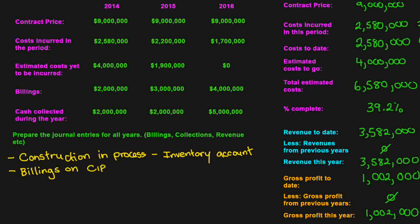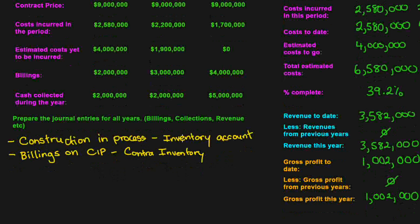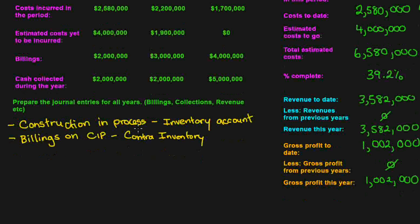The second account is Billings on Construction in Process. Billings on Construction in Process is a contra inventory account. Contra accounts decrease the account they pertain to — so if Construction in Process is $1,000,000 and Billings on Construction in Process is $500,000, then your net balance will be $500,000. This contra inventory account always appears underneath Construction in Process in the current assets section of your balance sheet.